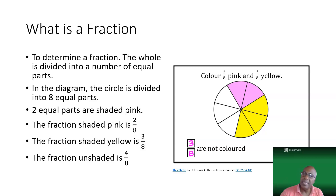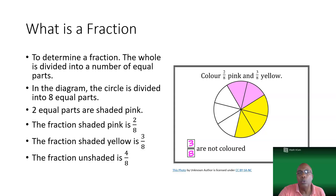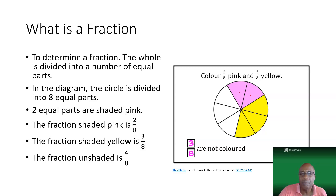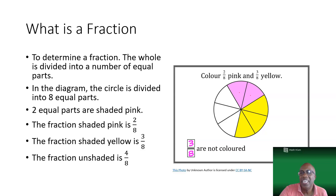From that whole, a number of those equal parts are removed or chosen to get a fraction. For example, in the diagram you can see we have two parts shaded pink. In other words, 2 out of the 8 parts are pink, which means the fraction shaded pink is 2 over 8. The 2 represents the part that you are considering, and the 8 represents the total number of equal parts the whole is divided into.